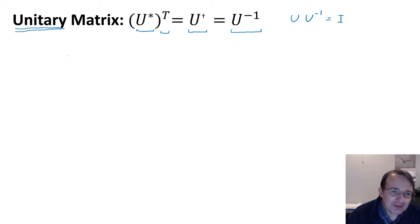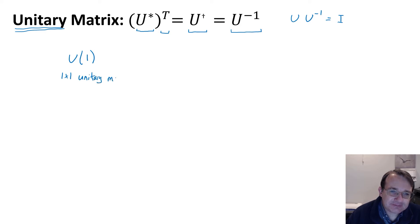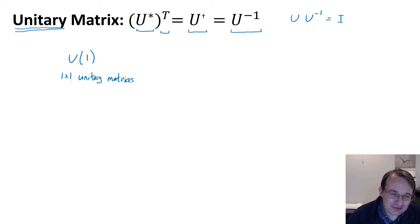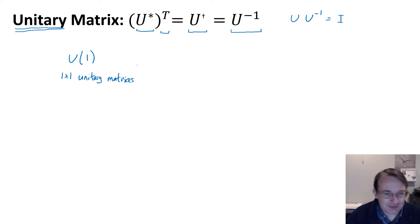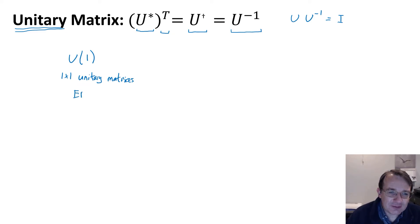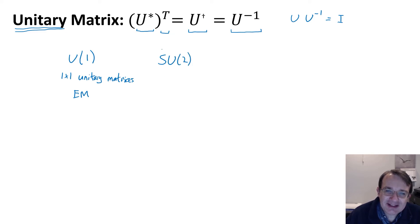With that definition in mind, there are different classes of groups that are particularly useful. For example, U(1) is the group of 1×1 unitary matrices. This group represents a symmetry we will see later in the standard model — it is in fact associated with electromagnetism.